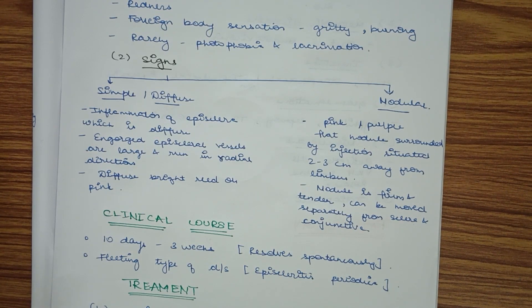The nodule is mobile from the sclera and conjunctiva. When we learn about scleritis, we'll know that the nodule in scleritis is generally immobile.